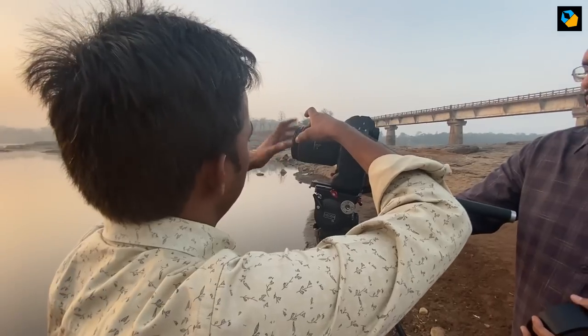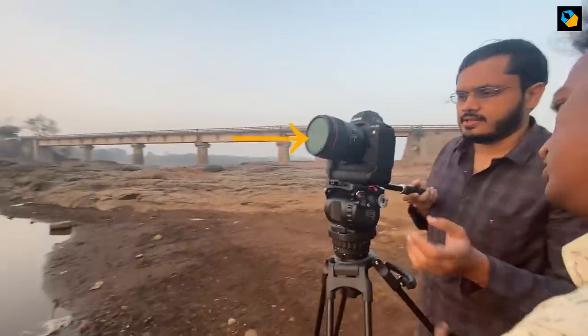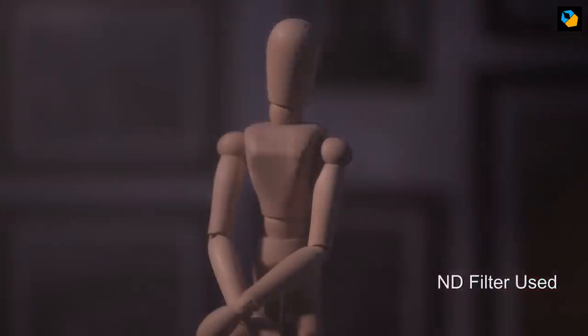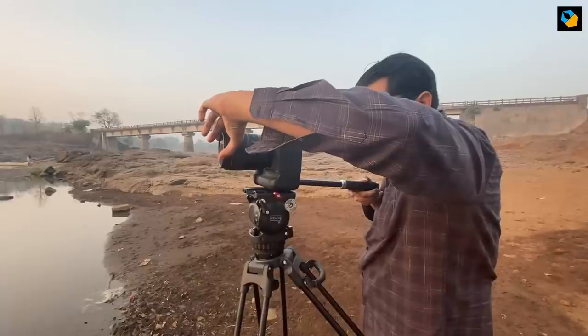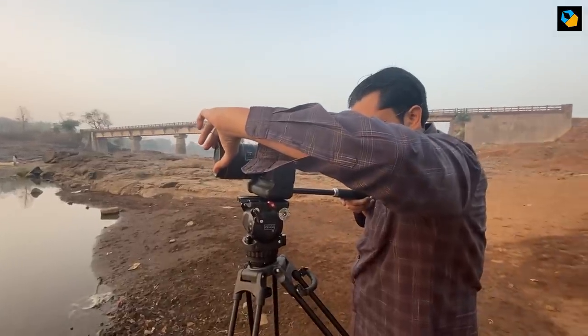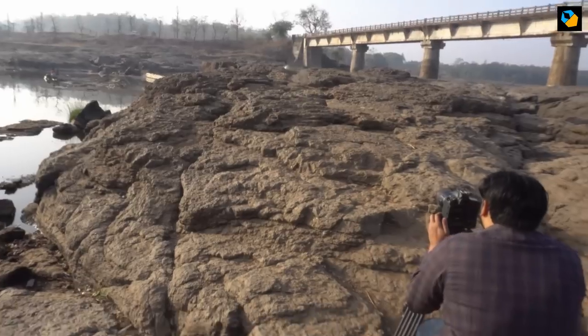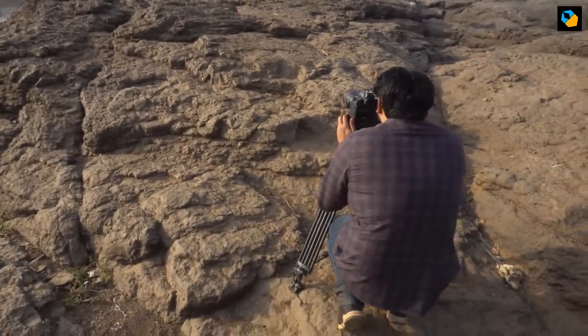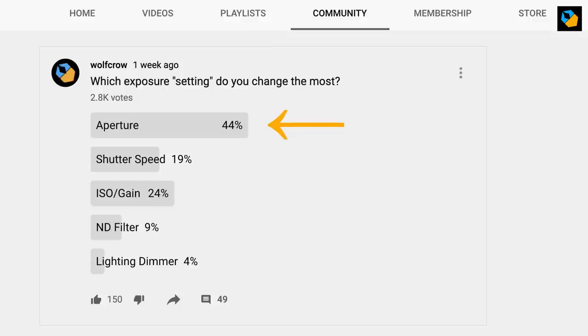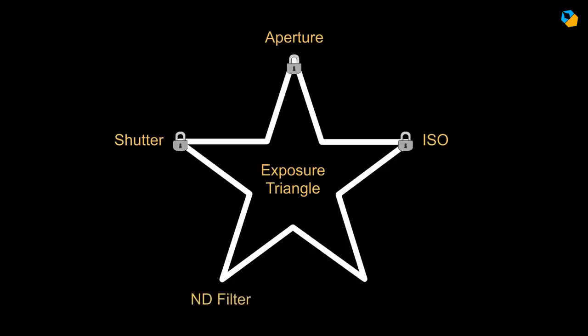Number 4: the ND filter. The ND filter is a piece of glass you insert at the front or back of the lens to cut down light. It comes in different powers, each reducing more light than the last. The numbering system of ND filters is slightly complicated, similar to the aperture. The ND filter is important because sometimes you need to cut down light, but you don't want to touch the aperture, shutter, or ISO.